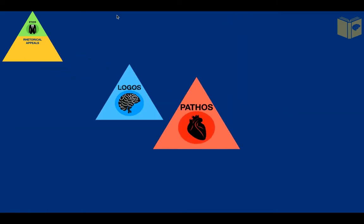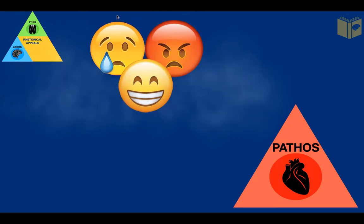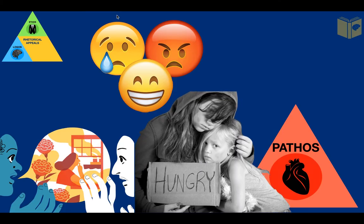Finally, pathos. Pathos is probably the most powerful of the three appeals but it can be the most unpredictable. It relies on appealing to human emotion — essentially convincing an audience through the use of fear, guilt, sadness, nostalgia, or excitement. Its goal is to get the audience to passionately care about what you're trying to convince them of. This can be done by telling a compelling or heartfelt story, or perhaps by showing striking images.